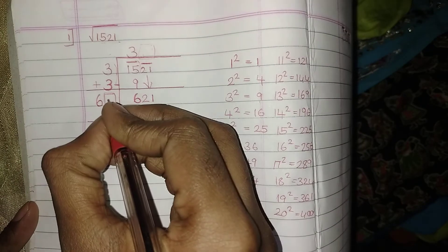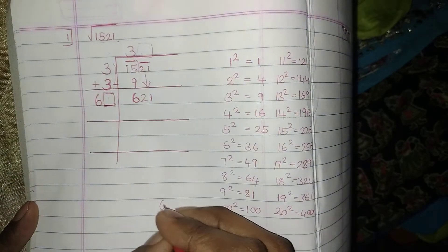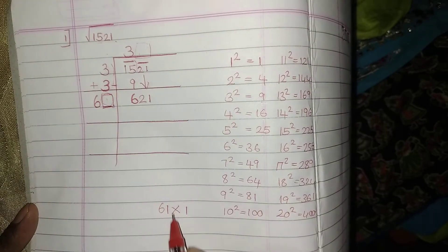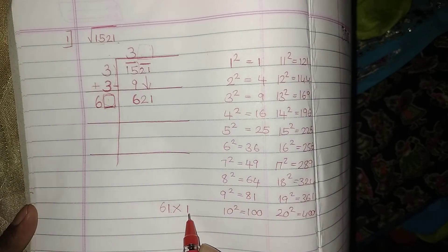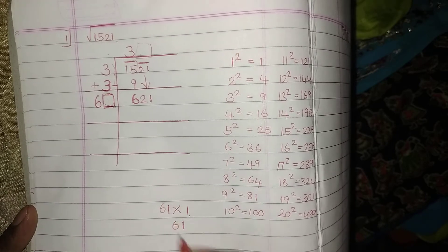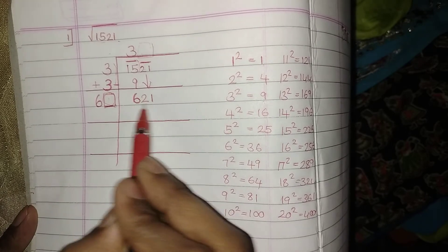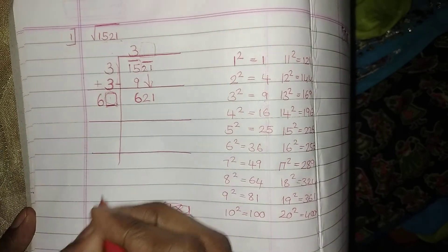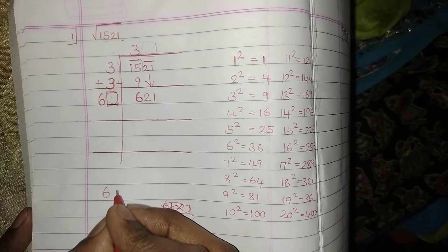Start with the digit called 1. 61 into 1, whatever I am writing in this place, that 1 should be another multiplicand, got it? 61 into 1 is 61. So do I have 61 here? No, I am having 621. So let me go with the next number.